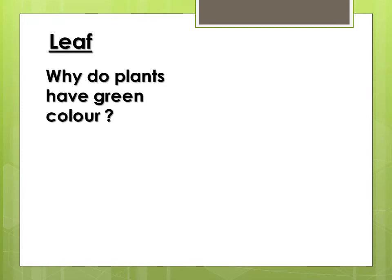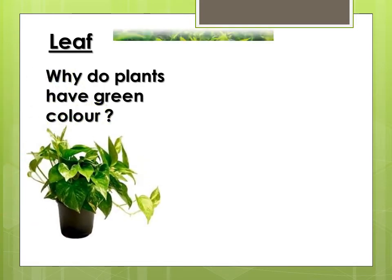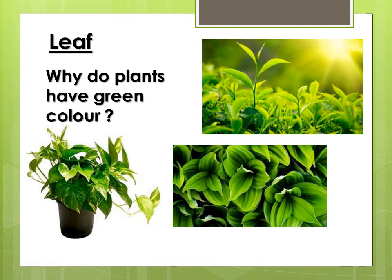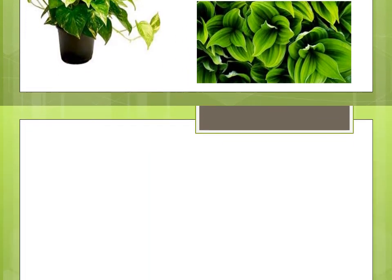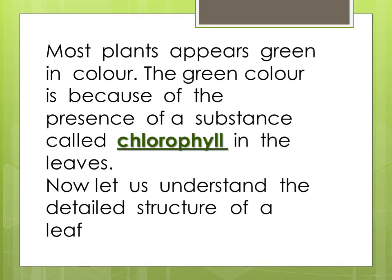We all can see around that most plants are green. Can you tell me why do most plants appear green in color? The plants appear green in color because of the presence of the green substance called chlorophyll. Chlorophyll makes the plant green and also helps the plant to make its food.